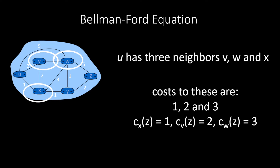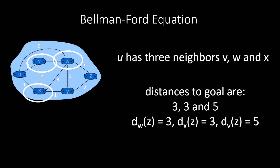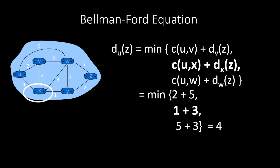Router u has three neighbors: v, w, and x, with costs of one, two, and three to reach them. These neighbors have distances to the goal node z — x has distances one and two, v has two, one and two, and w has one and two, giving totals of three, three, and five. Adding the cost to each neighbor with that neighbor's distance to the goal, the cheapest route via x has a minimum cost of four — from u to x, x to y, to z. That's the Bellman-Ford equation.